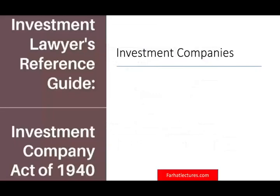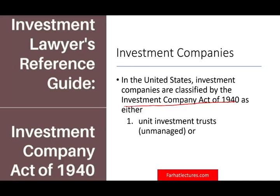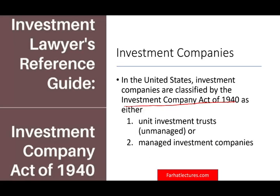Today we're going to be talking about investment companies. The first thing we want to know is the act that governs them. In the U.S., investment companies are classified under the Investment Company Act of 1940, and they fall under two major categories: either a unit investment trust, which is an unmanaged trust, or managed investment companies.